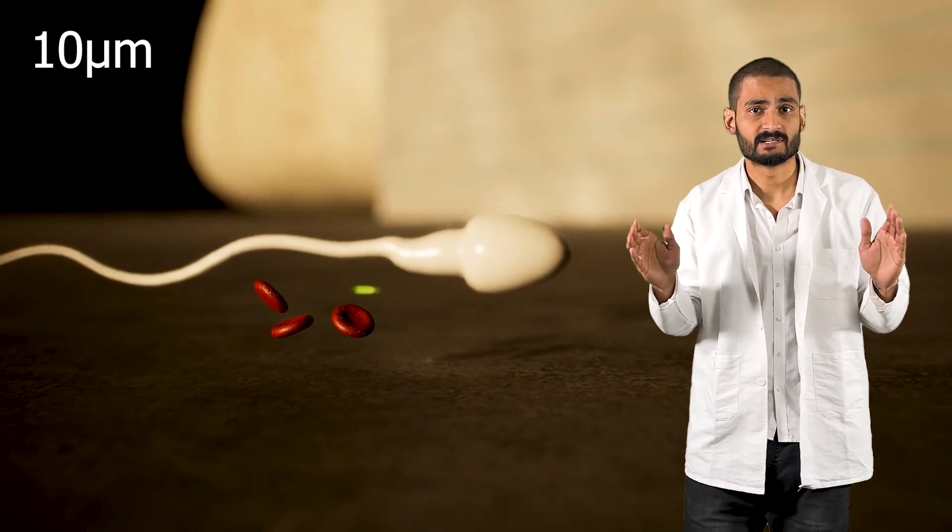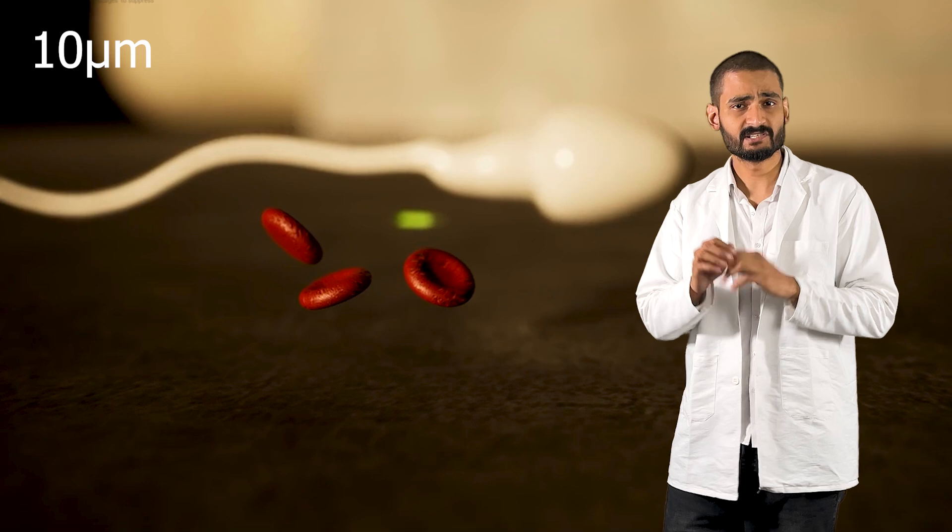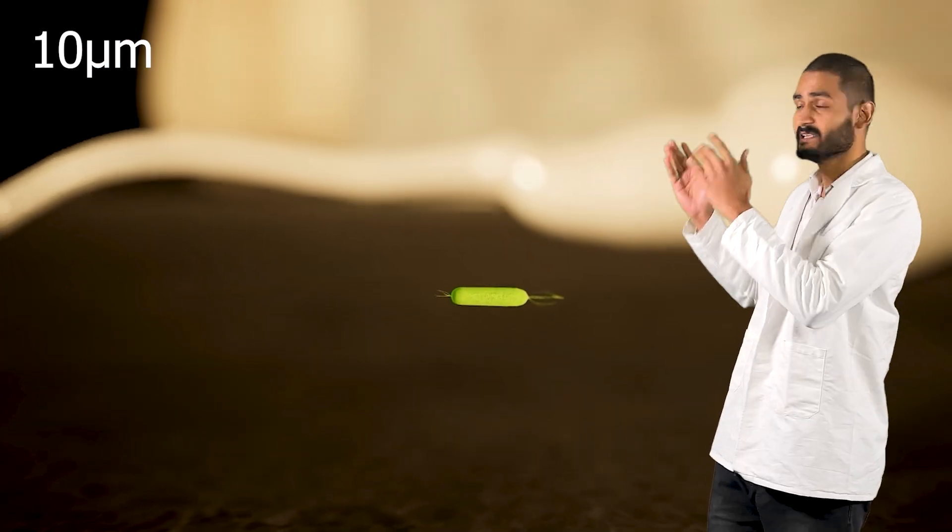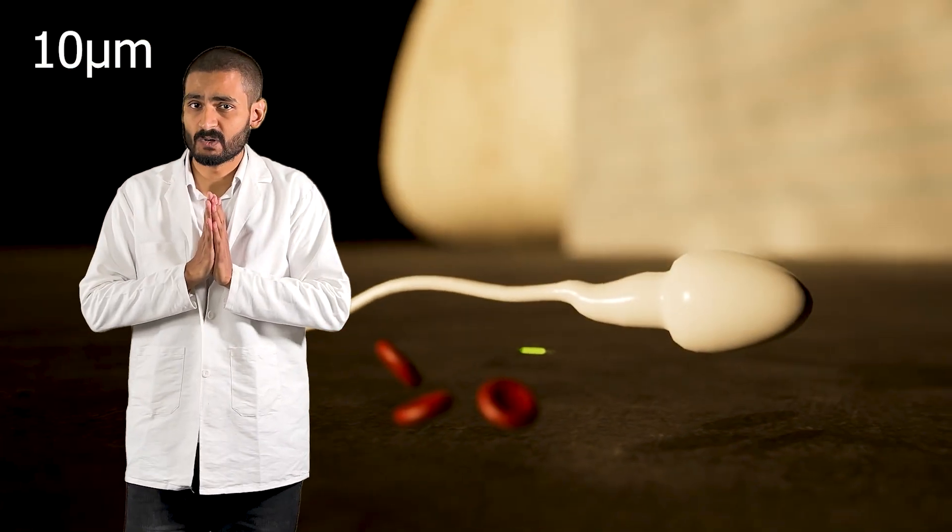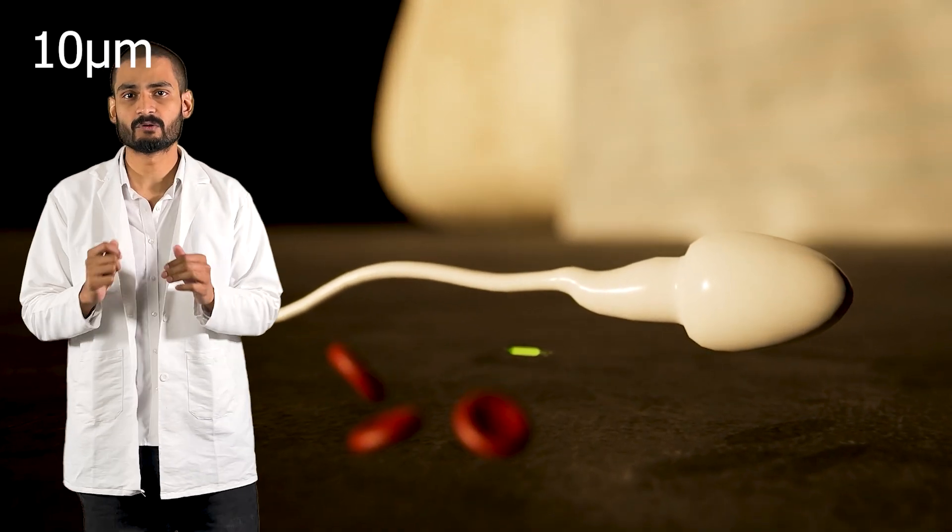At 10 micrometers, this is roughly the size of a human red blood cell which is about 6 to 8 micrometers. Many bacteria like the E. coli also come in this range at about 2 micrometers. Whereas the human sperm is quite relatively very large at about 50 to 60 micrometers.